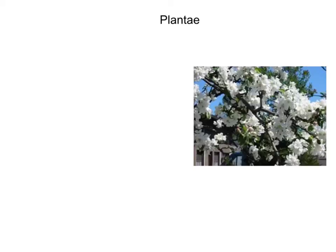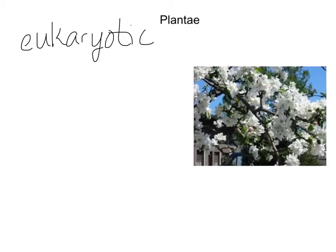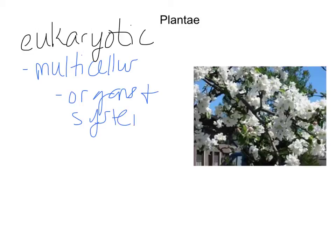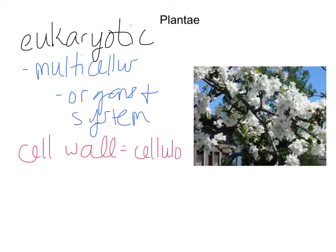Our next kingdom is Plantae, or the plant kingdom. Again, it has to be eukaryotic because we're in the Eukarya domain. Plant cells have a cell wall, chloroplasts, mitochondria, endoplasmic reticulum, and a large central vacuole, so they are eukaryotic with membrane-bound organelles. Plants are also multicellular, and their cells can be organized all the way up to the organ systems level. They have vascular systems and various organs like xylem and phloem, so plants are a little more complex than most of us give them credit for. Their cell wall is made of cellulose, which is what we call fiber and is indigestible by most animals.